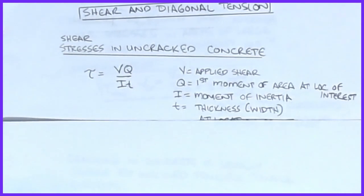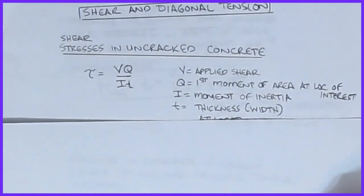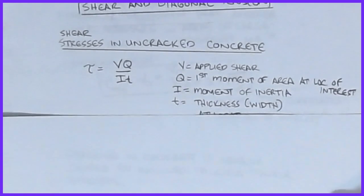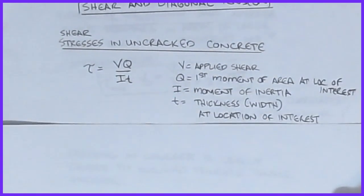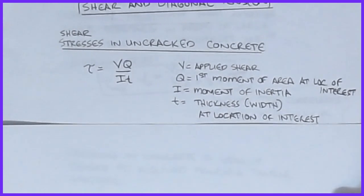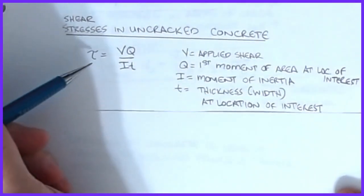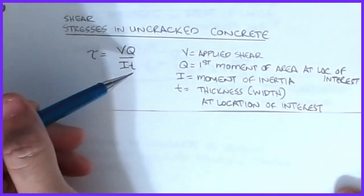If you recognize the formula below — tau equals VQ over IT — this was the formula for shear stress in a cross section. A lot of what we do doesn't use exactly this formula because it is rather cumbersome to use, but it does have its roots in this equation. The shear stress tau equals VQ over IT.